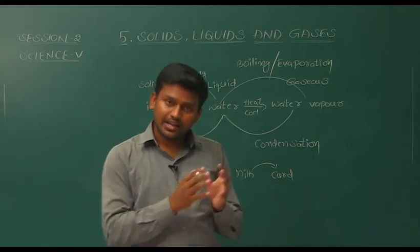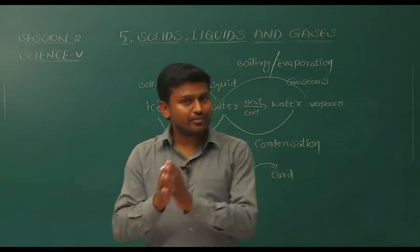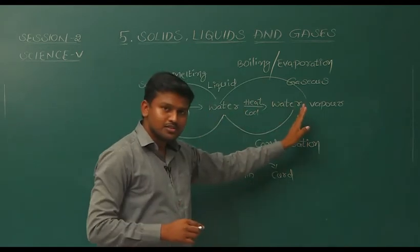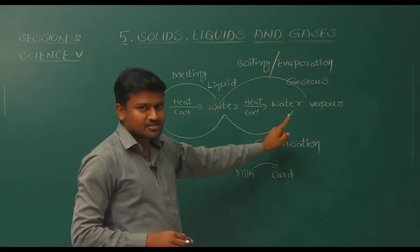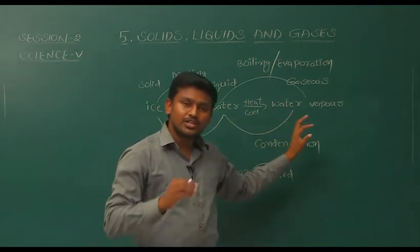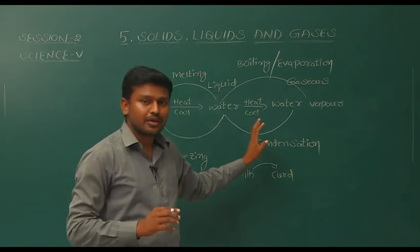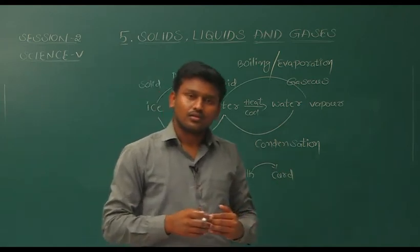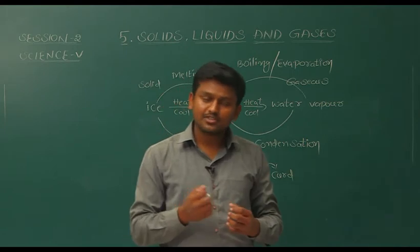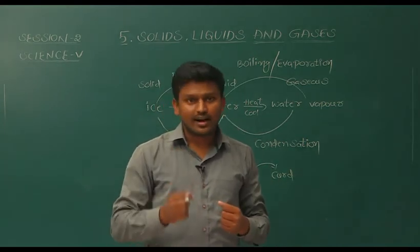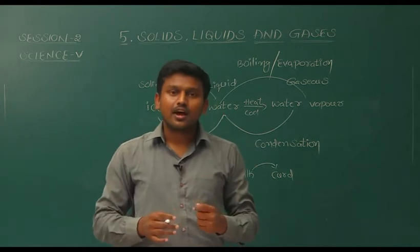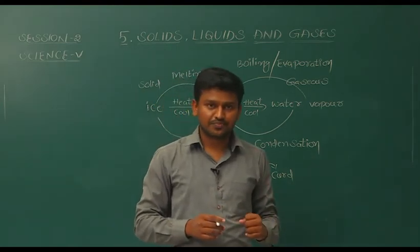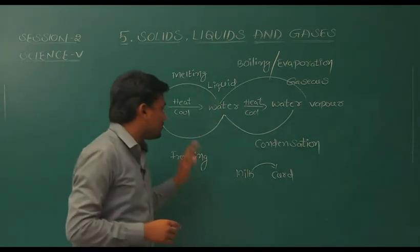In a chemical change, a new substance forms with different properties. But in a physical change, though a substance changes form, we can get the original composition again. In a physical change, there is a change in the state of matter, size, and shape. In a chemical change, there can be a change in smell, or a new sound produced — just like burning firecrackers, which produce sound. That is a chemical change.